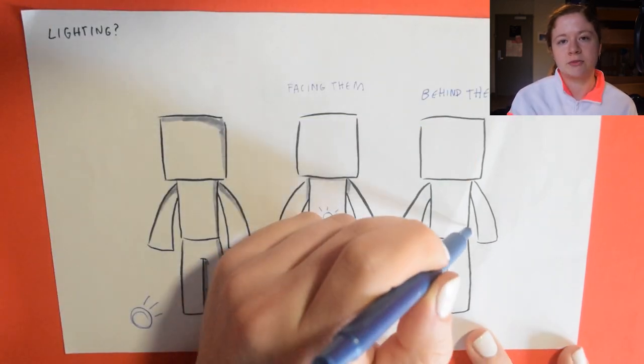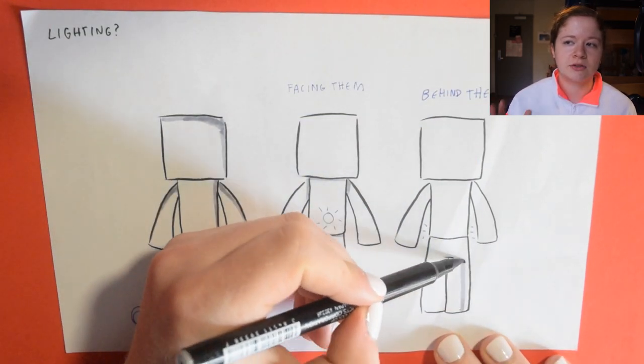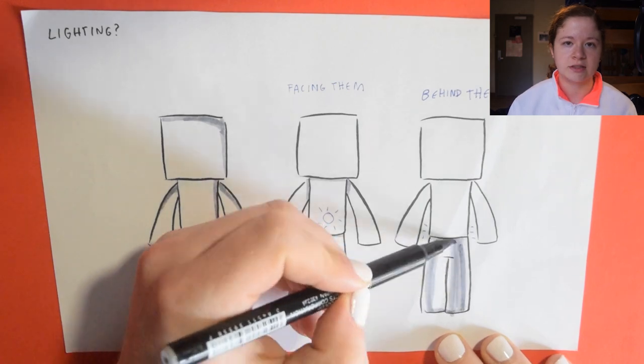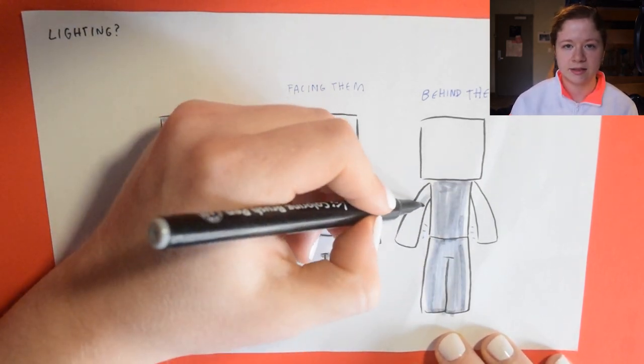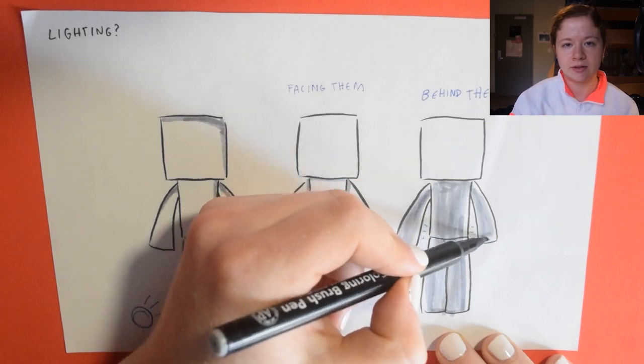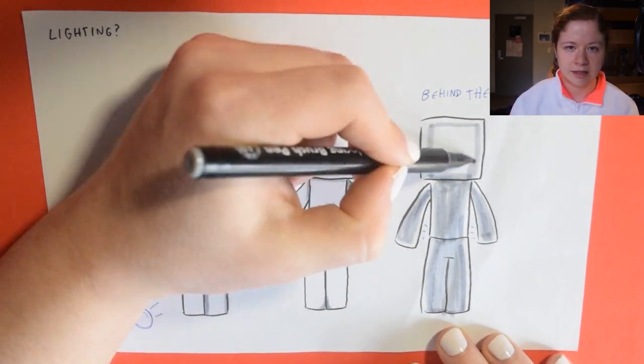And then if the light was coming from straight behind them, you'd have shadows on pretty much the entire character except for the very outline of the character because the light would leak onto the outline of the character, thus creating a highlight.